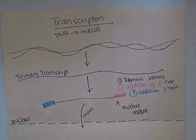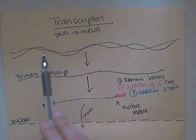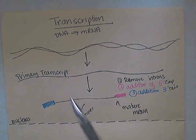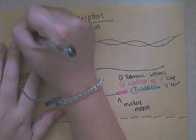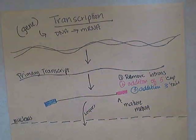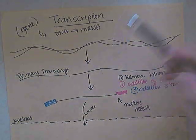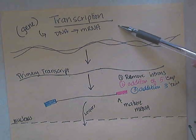In this video we are going to talk about the second process of gene expression, which is translation. What we did in the process of transcription is take a segment of DNA, specifically a gene. A gene is just a short segment of DNA that codes for a protein, and we converted it to mRNA.